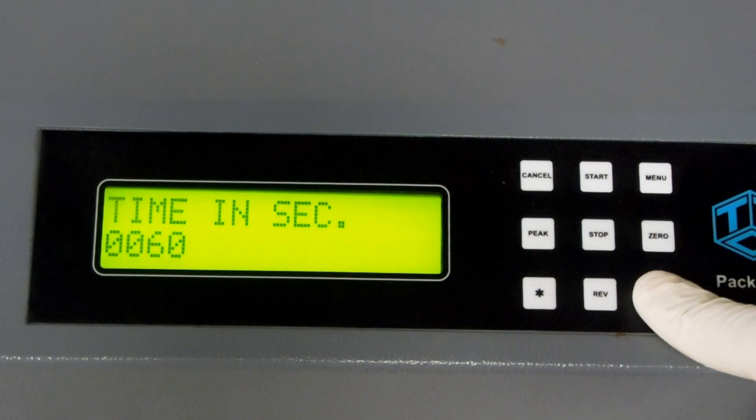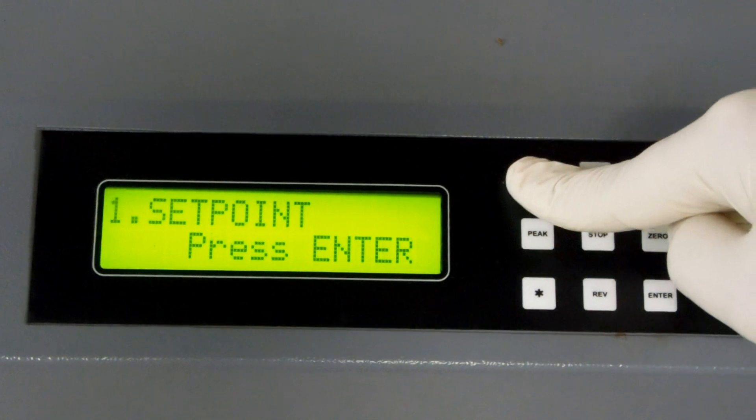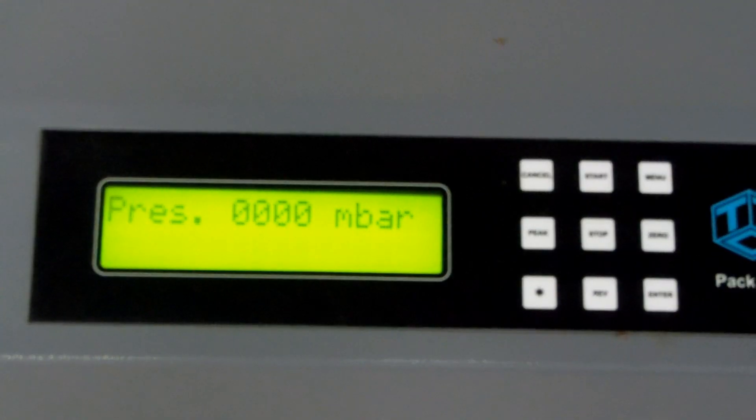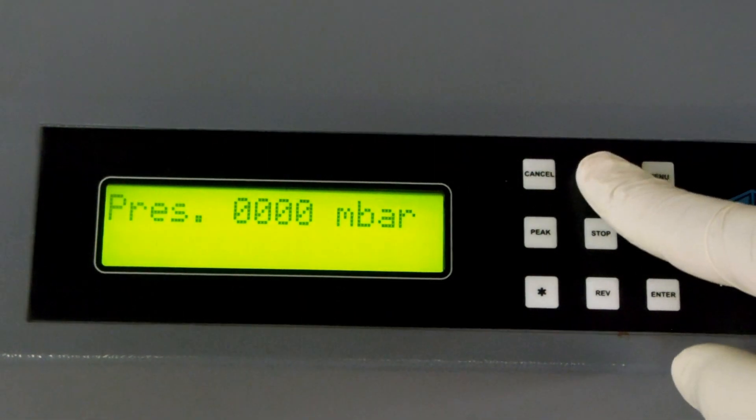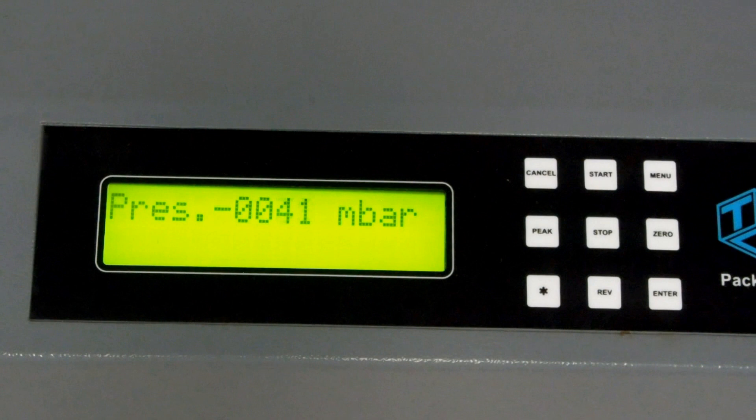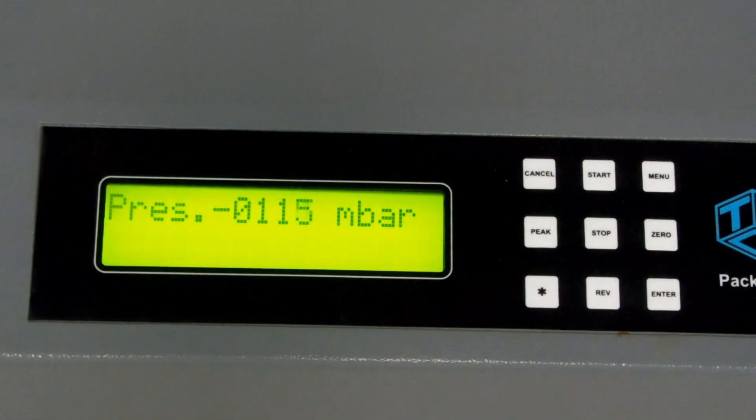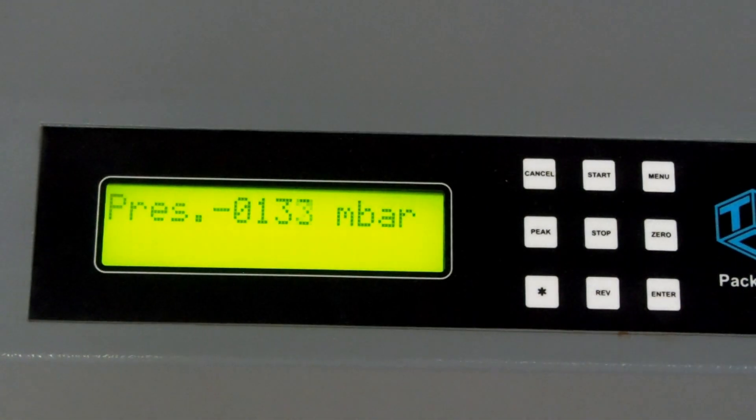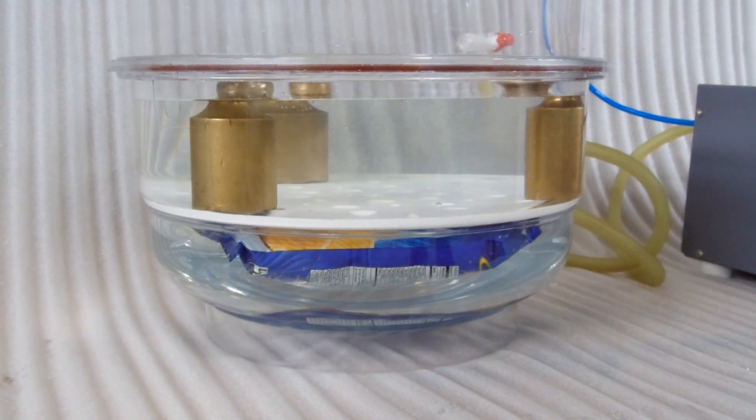Press enter to accept. Press cancel to exit the menu. Press zero and then press start. The vacuum pump will now start generating vacuum inside the tank. Because of the vacuum, you will see the pouch swell up.